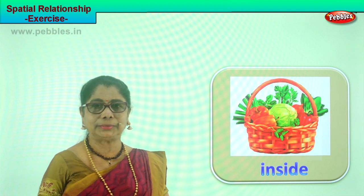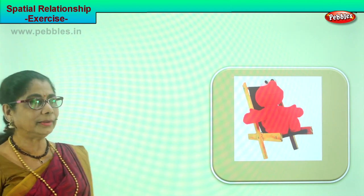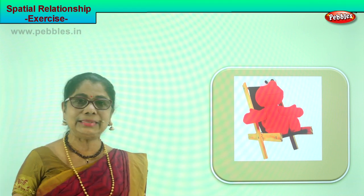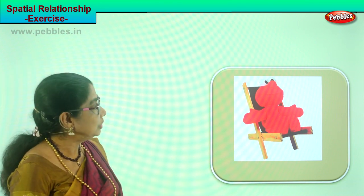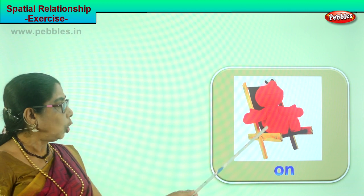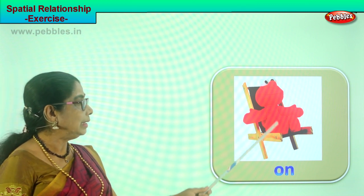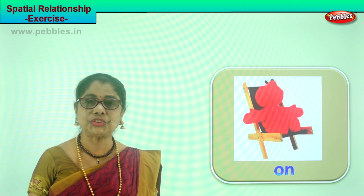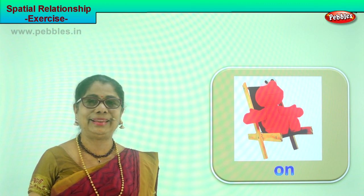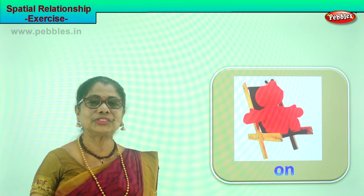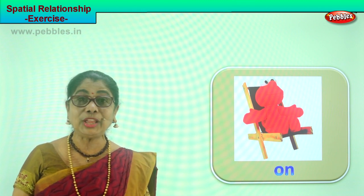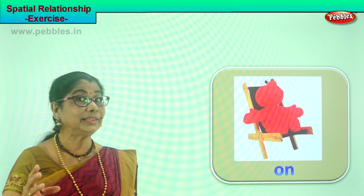Let's look at another picture. We have a teddy. Where is the teddy sitting? Sitting on the chair. The little toy is being placed on the chair. The little girl is playing — she took the teddy and put it on the chair. What are you learning? Spatial relationship.